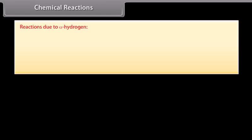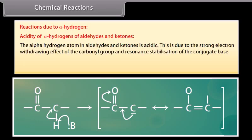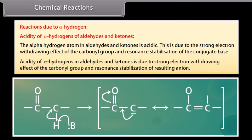Reactions due to alpha hydrogen. Acidity of alpha hydrogens of aldehydes and ketones: the alpha hydrogen atom in aldehydes and ketones is acidic. This is due to the strong electron-withdrawing effect of the carbonyl group and resonance stabilization of the conjugate base, resulting in stabilization of the carbanion.